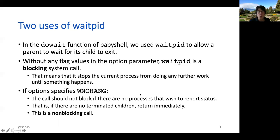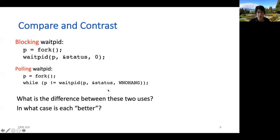Let's look at this in more detail. `waitpid` gives us two different modes. The first mode, where you don't specify any options, is called a blocking call — we block the calling process, meaning it makes no forward progress until the child process exits. However, you can specify the NOHANG option, which says: check to see if one of your children has exited, and if it hasn't, just return immediately. This gives us two very different modes of waiting on child processes: blocking wait and non-blocking polling.